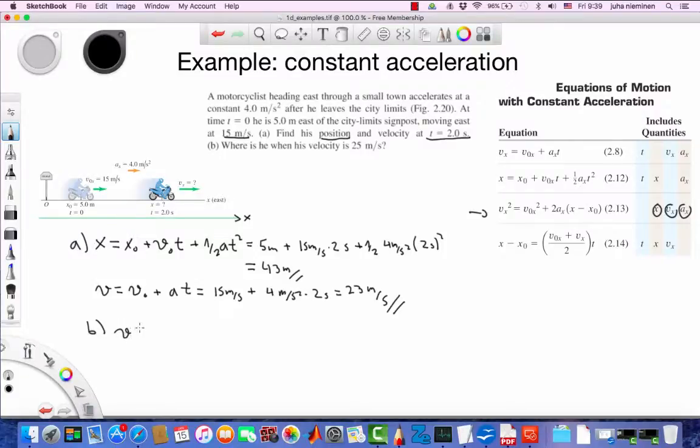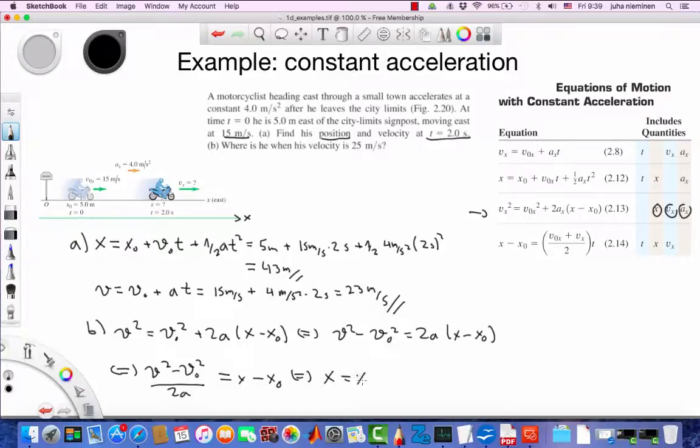I'll drop the subscript again. v² = v₀² + 2a(x - x₀). We'll arrange to solve for x. v² - v₀² = 2a(x - x₀). Bring the 2a to the other side and divide by it.